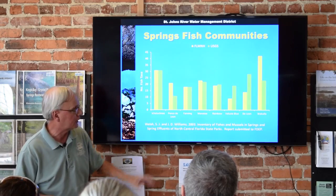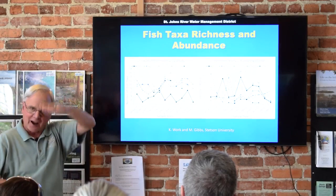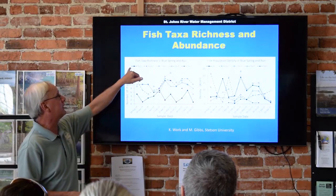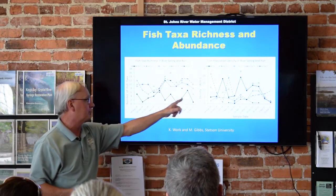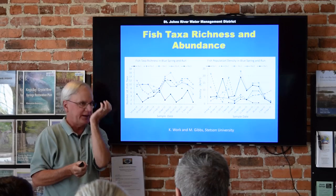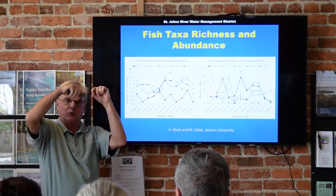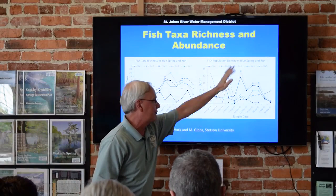Data from Kirsten Work and Missy Gibbs at Stetson University from Blue Spring is typical of fish data — very, very variable. Station 1 is right up by the Blue Spring head spring; station 5 is downstream near the St. Johns River. There are very few fish up near the head spring because of the very low dissolved oxygen. The main species near the head spring are livebearers like mosquito fish, which have an upturned mouth so they can respire right at the water surface where oxygen is higher, and air-breathing fish like gar, which can take a bubble of air to help respire. Fish abundance overall is extremely variable.